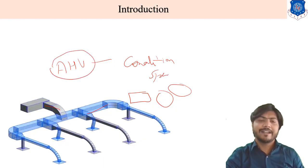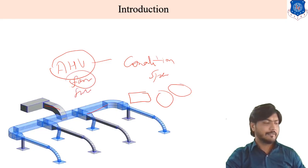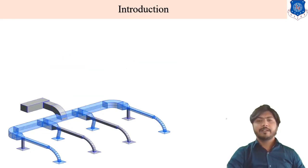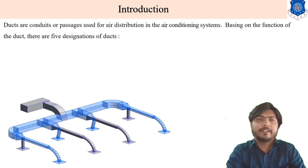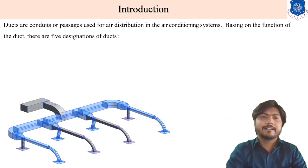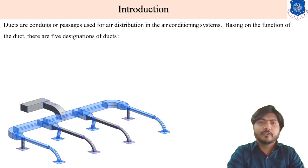AHU stands for air handling unit, which consists of a fan, filter, and so on. This is the main fundamental purpose of the duct. Ducts are conduits or passages used for air distribution in an air conditioning system.